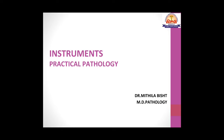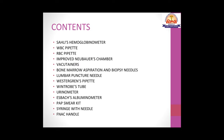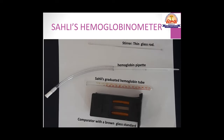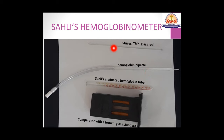This session is about instruments commonly asked in the practical exams of pathology. The first instrument is Sahli's hemoglobinometer. Its parts are: a comparator with brown-colored glass standards, a Sahli's graduated hemoglobin tube, a hemoglobin pipette with a mark at 20 microlitre, and a stirrer, which is a thin glass rod.